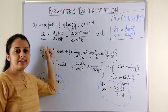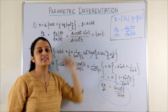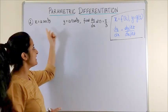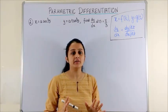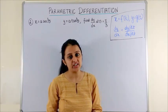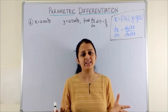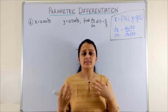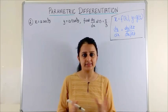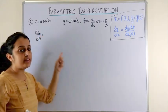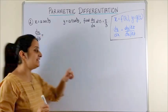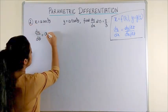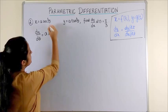Substituting dx/dt and dy/dt in the main formula, we get a·cos t on top and a·cos²t/sin t on the bottom, and the final answer is tan t. So dy/dx in terms of the parameter is tan t. For question 2, we are given x and y once again in terms of a parameter which is theta. Note that a parameter is just like any variable — it could be represented by t, theta, x, y, z, anything.